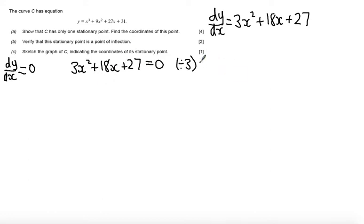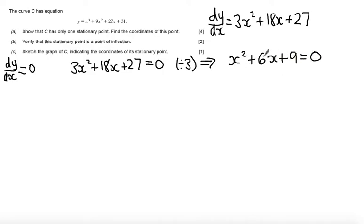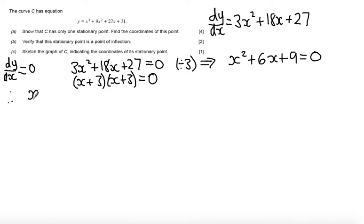Dividing through by 3 I get the quadratic x squared plus 6x plus 9 equals 0. Looking for factors of 9 that add to 6 I get x plus 3 multiplied by x plus 3 equals 0. So therefore I only have one solution which is at x equals minus 3.